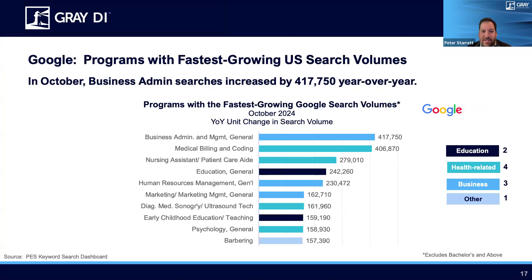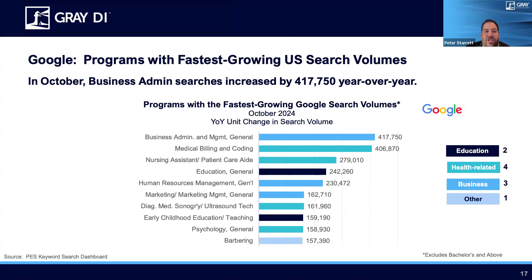Here we're looking at a chart showing the fastest growing programs based on Google search volumes — the year over year unit change in October 2024 compared to 2023. Of the top 10 we're showing, four are in health, three in business, two in education, and one new one from last month is barbering, which is an interesting one to show up. Business is at the top and some of these probably aren't surprising as they're very large programs — not just growing fast, but already large, which is driving a bigger unit change.